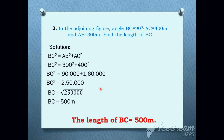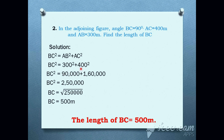Here is our next question. In the adjoining figure, angle B is equal to 90 degrees, AC is equal to 400 meters, and AB is equal to 300 meters. Find the length of BC. According to the Pythagoras theorem, BC square is equal to AB square plus AC square. AB value is 300, so 300 square, plus AC value is 400, so 400 square. That is, 300 into 300 equals 90,000, plus 400 into 400 equals 1,60,000.